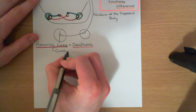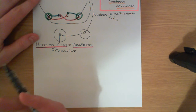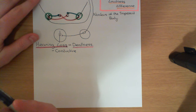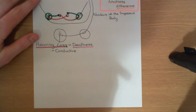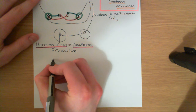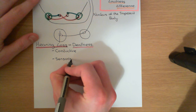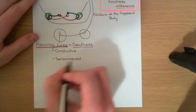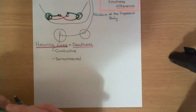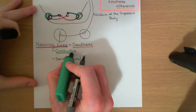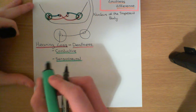Firstly, there is conductive hearing loss — that's a problem with the conduction of the oscillation associated with the sound through to the actual cochlea to cause oscillation in the vestibular duct. And then secondly, there is sensorineural hearing loss, which is a problem with the actual transduction of the oscillation of the cochlear duct into electrical signals. Let's talk about examples of what can cause each type.